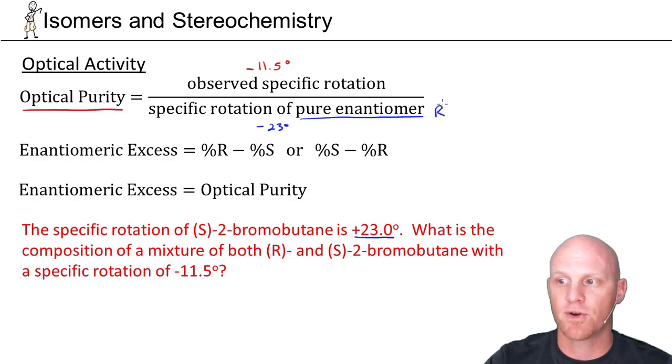For the pure R enantiomer. In this case, we can see that we've got an optical purity of 0.5. -11.5 over -23 is 0.5.